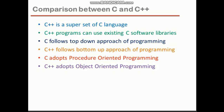Now, comparison between C and C++. What is the difference, comparison, and similarities between C and C++? Number one: C++ is a superset of C language. C++ programs can use existing C software libraries. C follows a top-down approach of programming, while C++ follows a bottom-up approach of programming. C adopts procedural-oriented programming, and C++ adopts object-oriented programming.